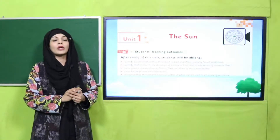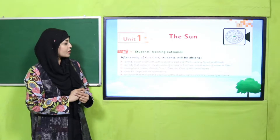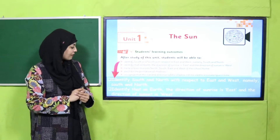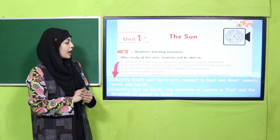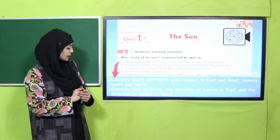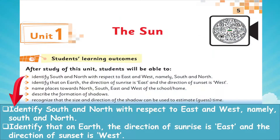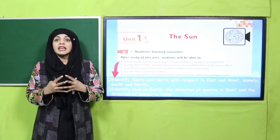Before that, let's quickly look at the student learning outcomes on page number five. Today we will be able to identify south and north with respect to east and west, and identify that on Earth the direction of sunrise is east and the direction of sunset is west.